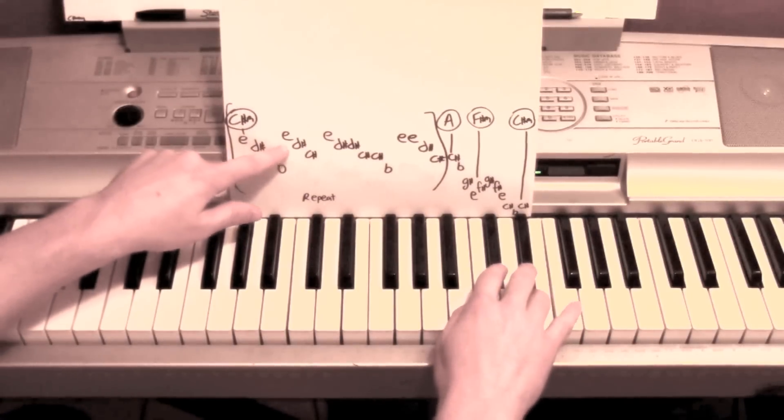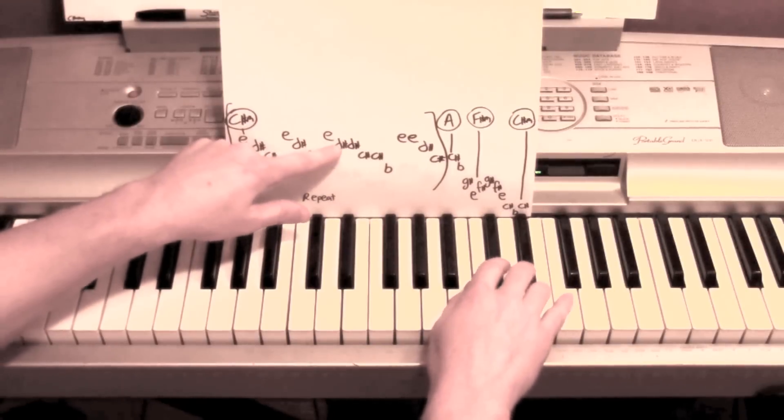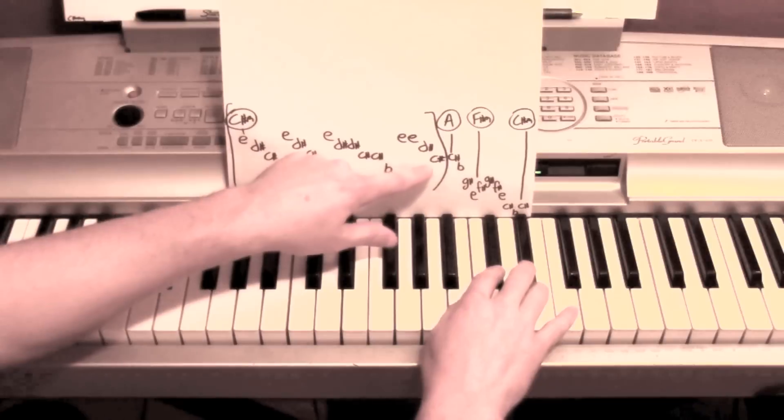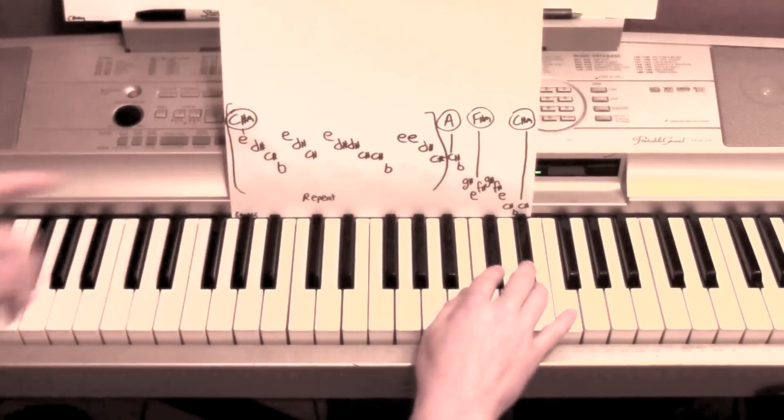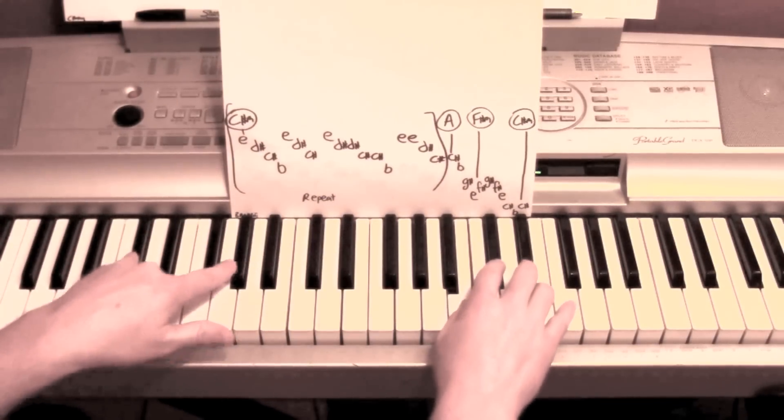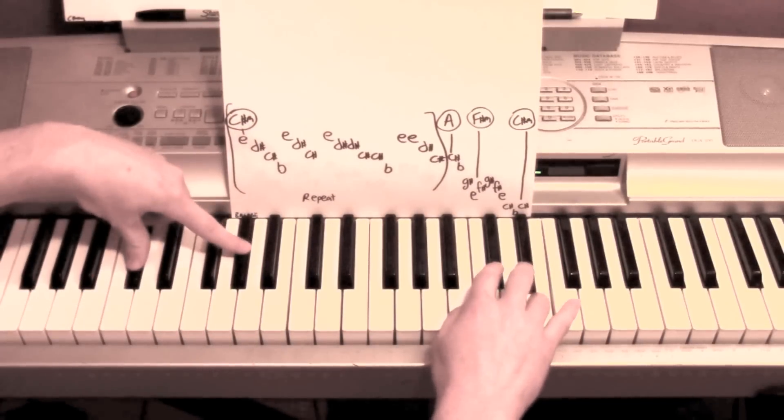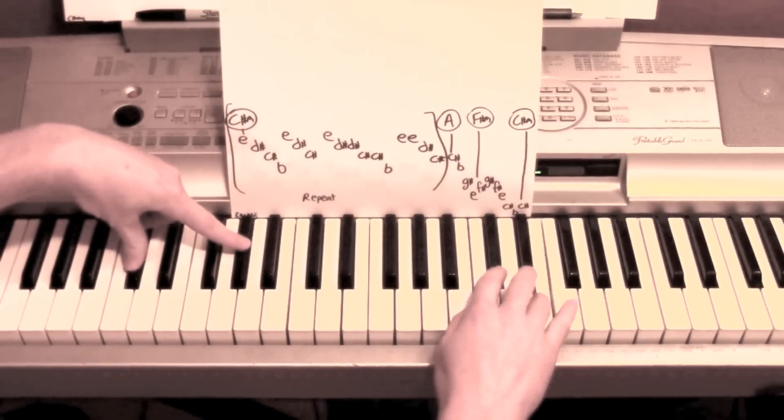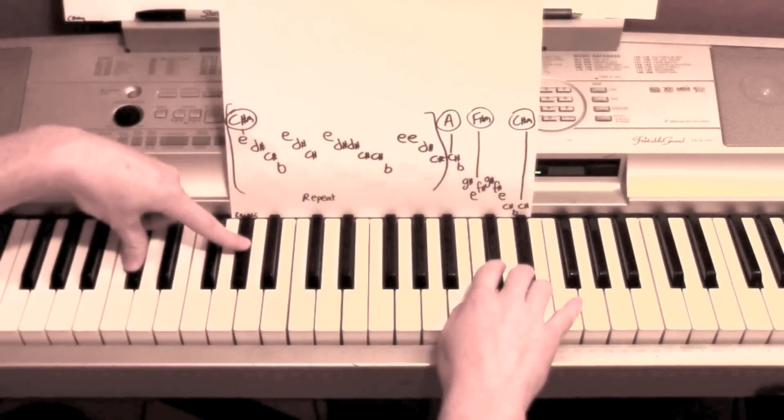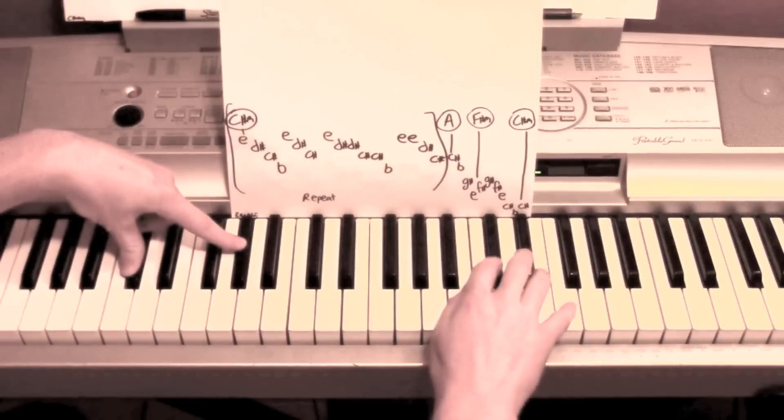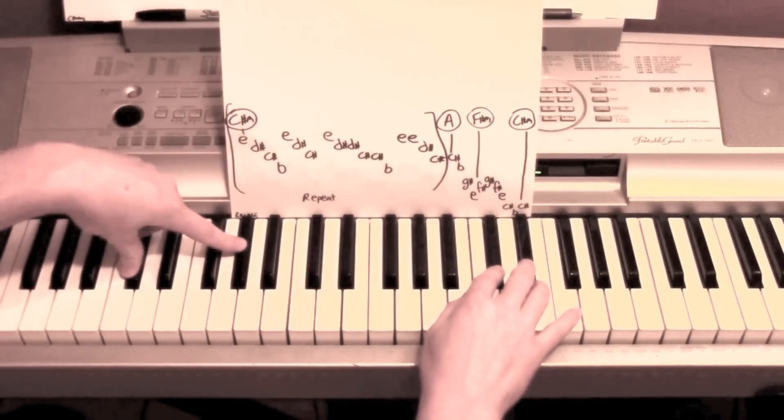E, D sharp, C sharp, B, E, D sharp, C sharp. E, D sharp, D sharp, C sharp. B, E, E, D sharp, C sharp. That repeats over and over again. With just kind of, you can kind of keep on repeating the C sharp minor on the left hand. Over and over again.